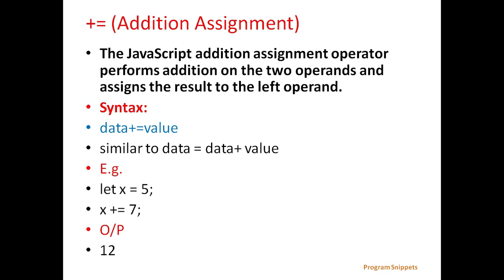Next is addition assignment. The JavaScript addition assignment operator performs addition on the two operands and assigns the result to the left operand. General syntax is: data += value, which is similar to data = data + value. For example, let x = 5, then x += 7. The output will be 12, that is 7 is added to x (which is 5), giving 7 + 5 = 12.